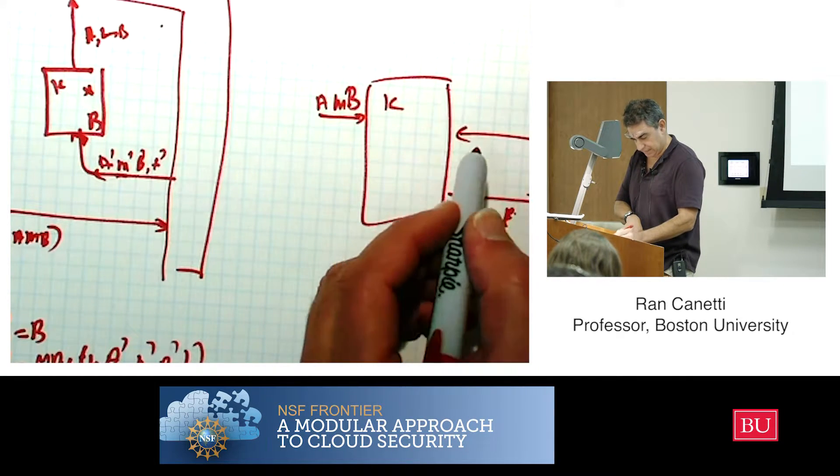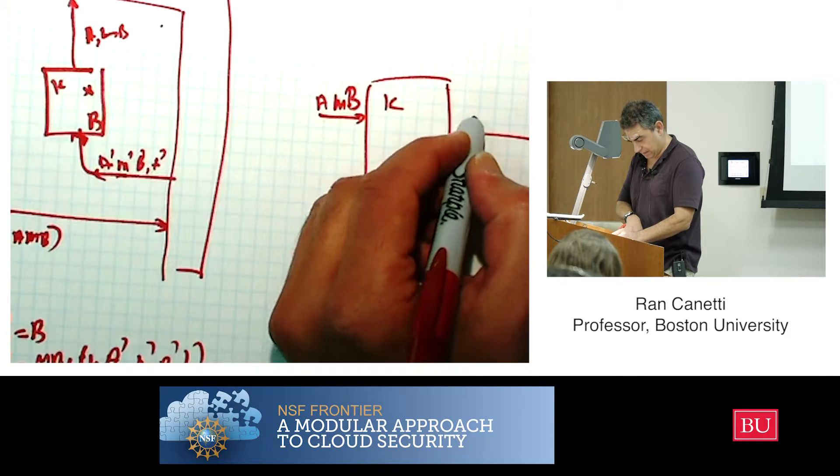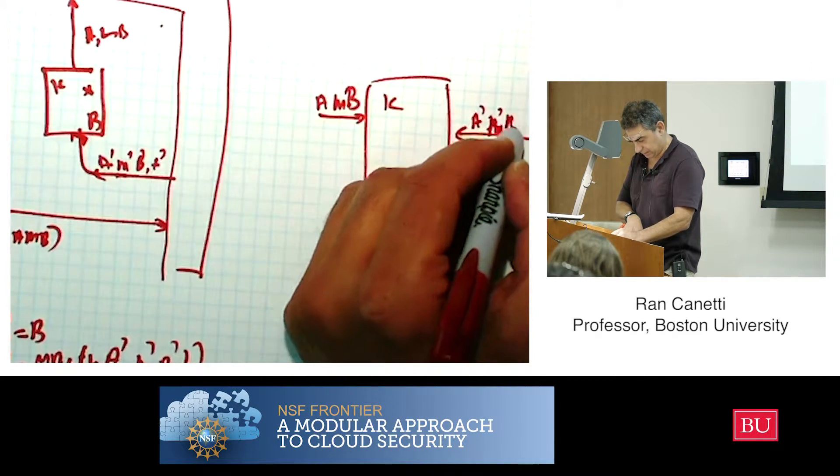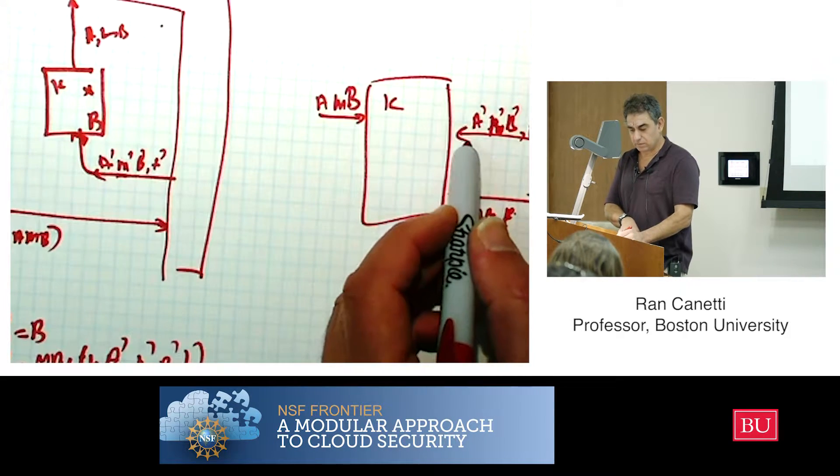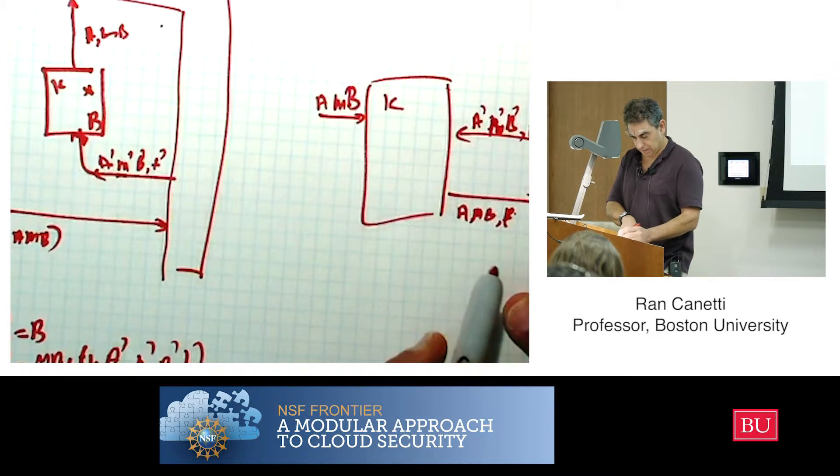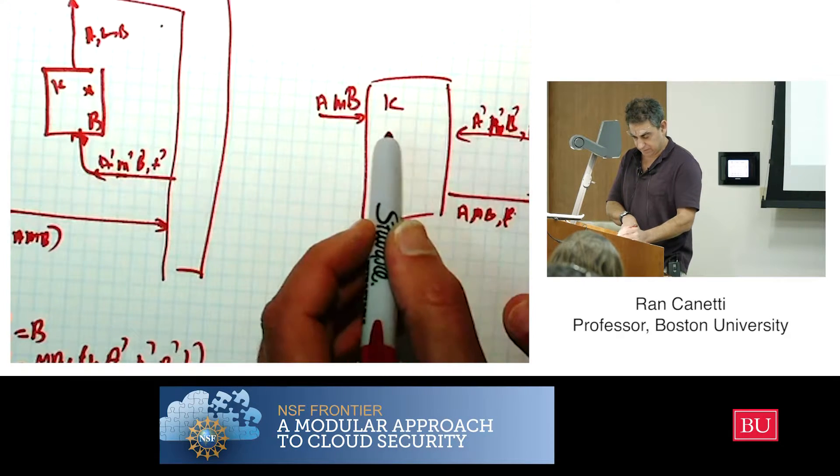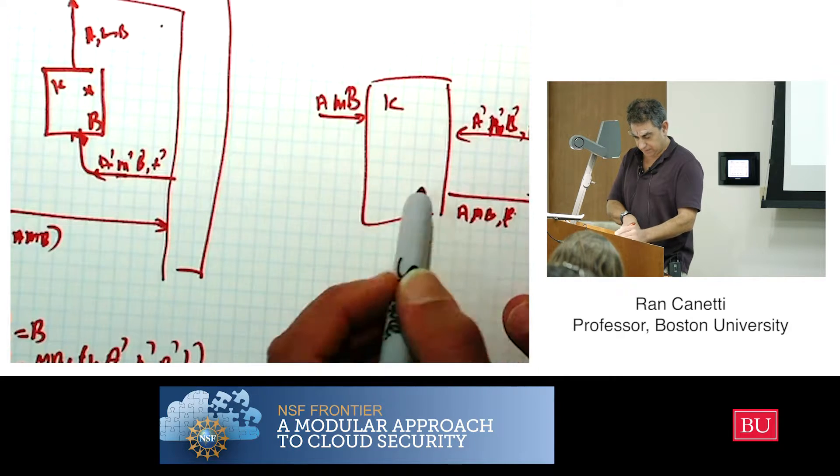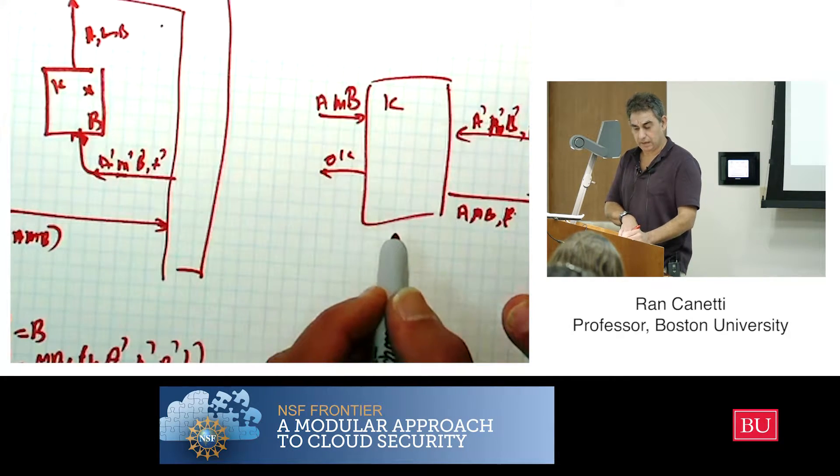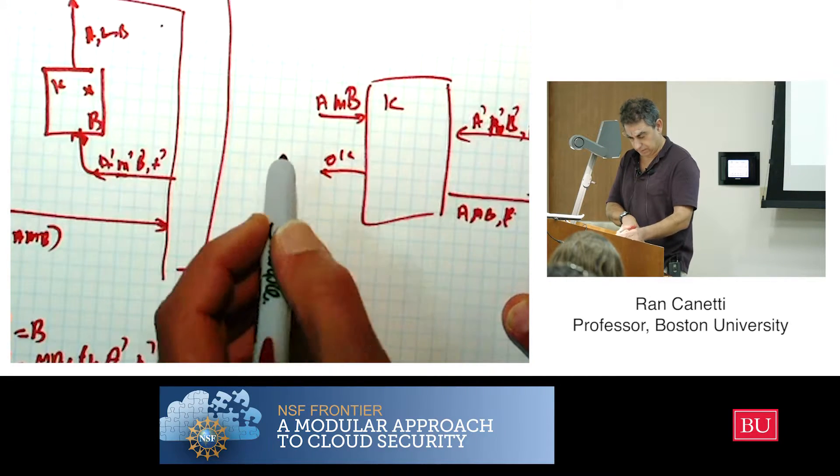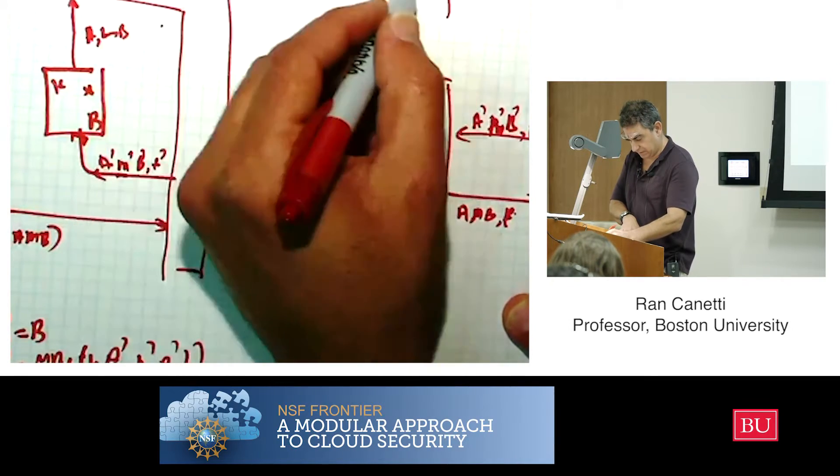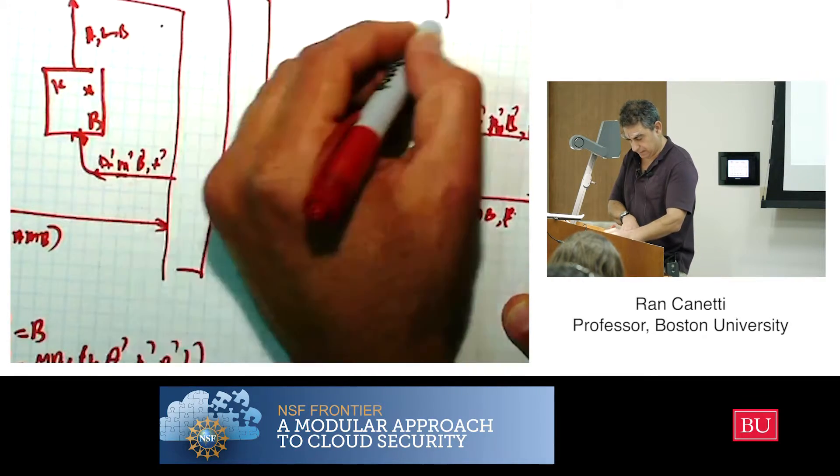And then the environment is sending again some A tag, M tag, B tag, and T tag. And the simulator is going to do the same verification that the receiver is doing. It's verified that B tag equals B, and the T tag verifies. And if yes, it's going to send okay to the trusted service.